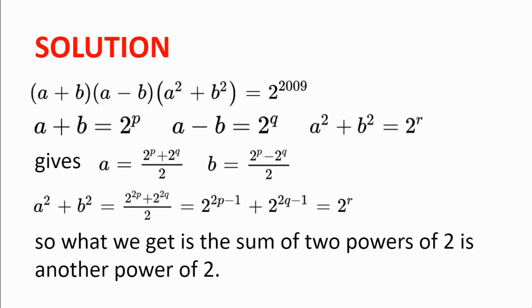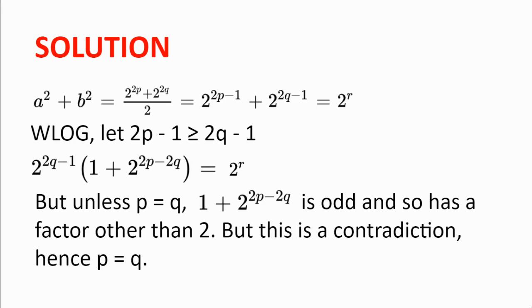So the sum of two powers of 2 gives another power of 2. Without loss of generality, let 2p minus 1 be greater than or equal to 2q minus 1. We can factorize as 2 to the power of 2q minus 1, multiplied by 1 plus 2 to the power of 2p minus 2q, equal to 2 to the power of r. But unless p equals q — which gives 2 to the power of 2p minus 2q equal to 1 — the expression 1 plus 2 to the power of 2p minus 2q is odd and has a factor other than 2. This gives a contradiction, since the left hand side can only have the prime factor 2. Therefore p must equal q.